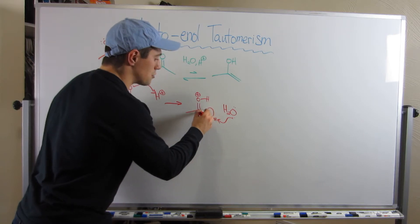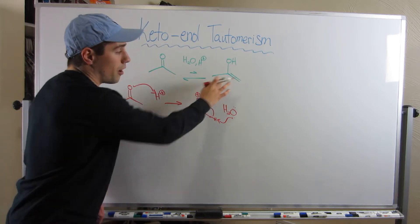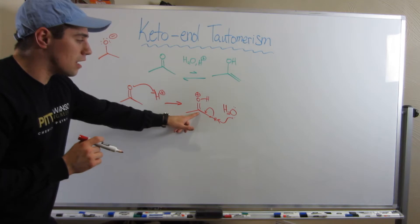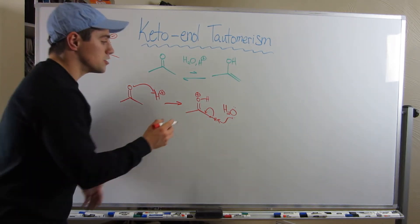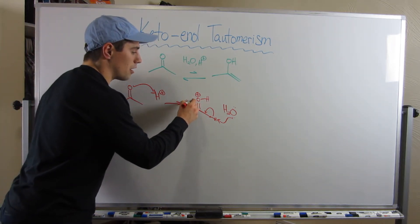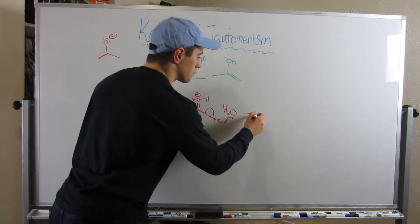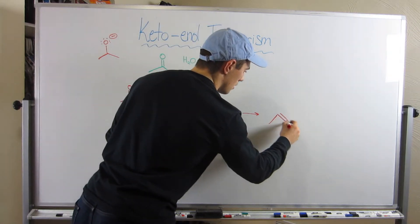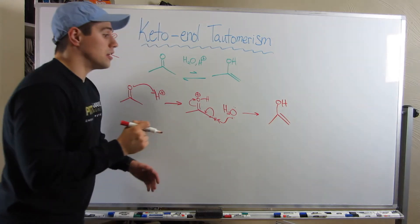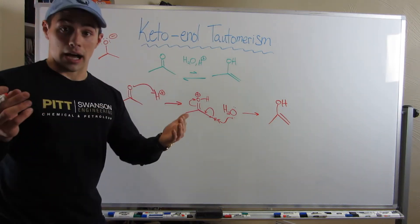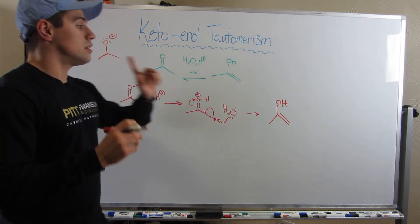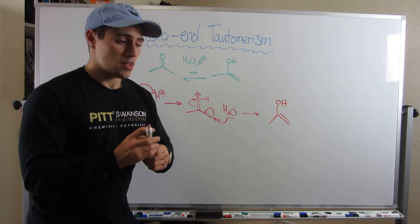The electrons from that hydrogen swing down and form the double bond we need. We're going to break the octet rule unless we do something, so we bounce electrons up onto oxygen. And voila, we have successfully tautomerized from our ketone to our enol.